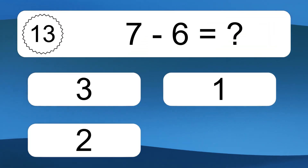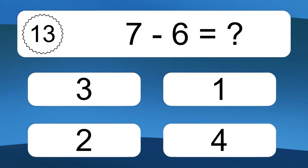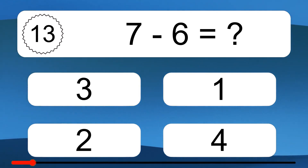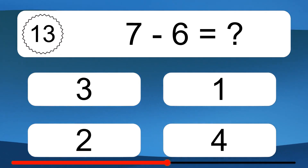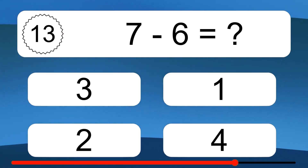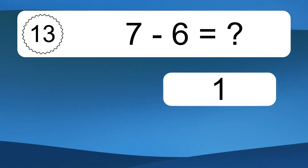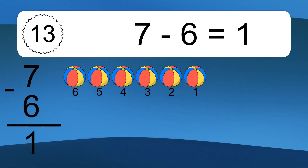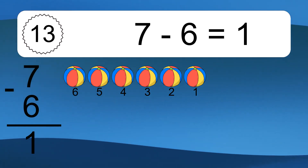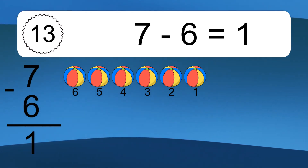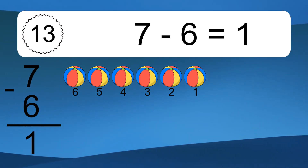7 minus 6 equals what? 7 minus 6 equals 1. Let's count it: 6, 5, 4, 3, 2, 1.